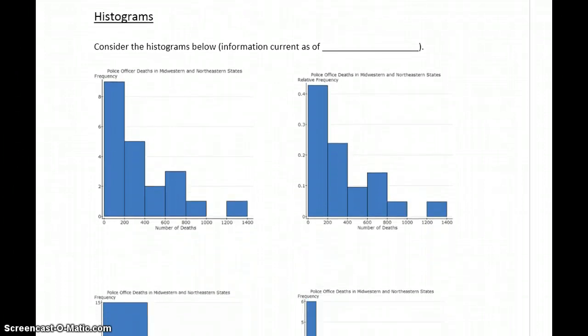So the first graph that we want to introduce is histograms. We want to take a look at some of the histograms below. It's data on police officer deaths in midwestern and northeastern states. And this data was accurate as of April 2012, it was the last time I collected this information.